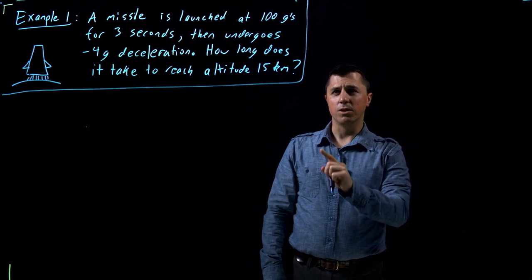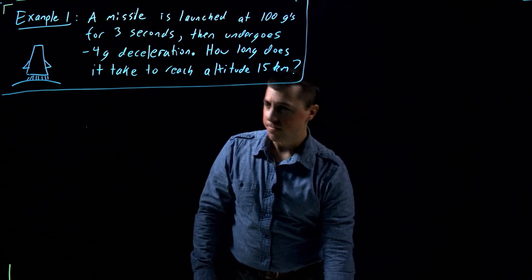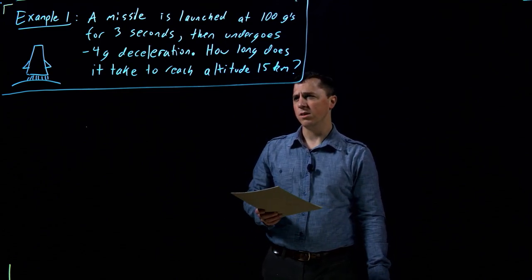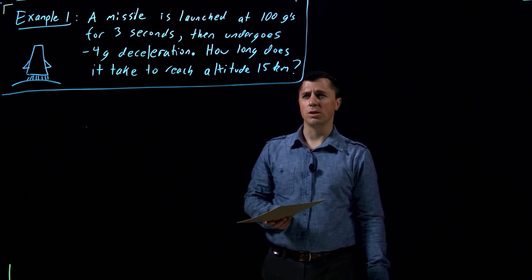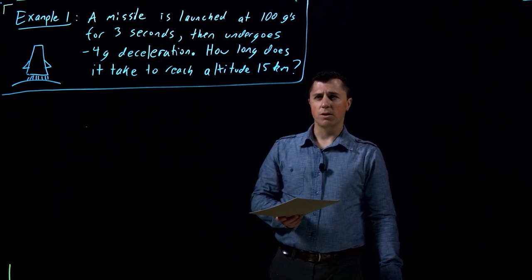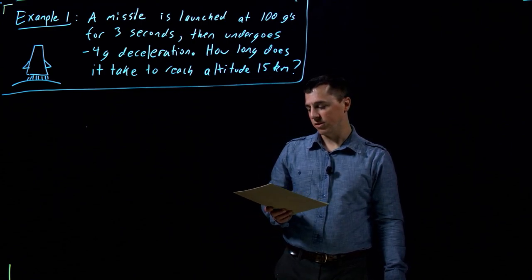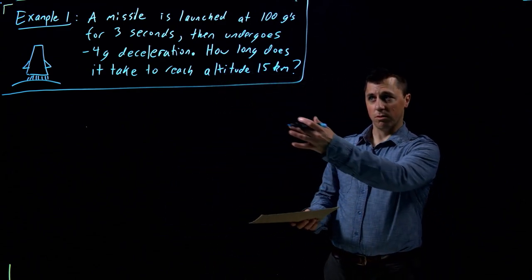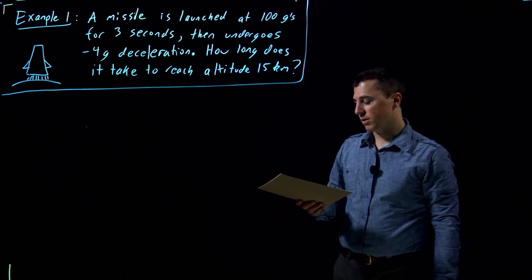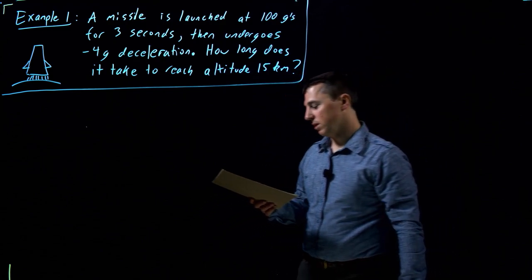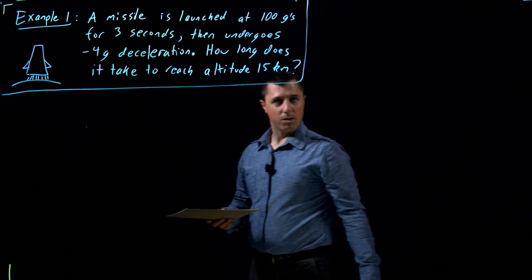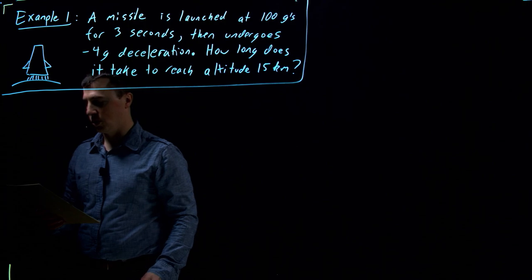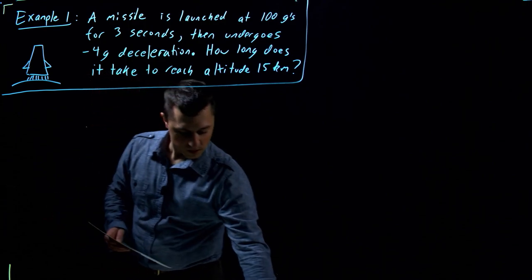In this first example, we have a missile being launched at 100 g's for three seconds, then undergoing a negative 4 g deceleration. The question is: how long does it take to reach an altitude of 15 kilometers? This is an example of two phases of constant acceleration kinematics, where acceleration is imposed as a function of time — a trivial, constant version.